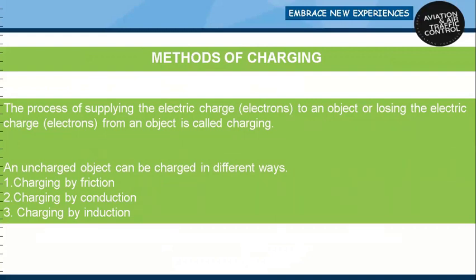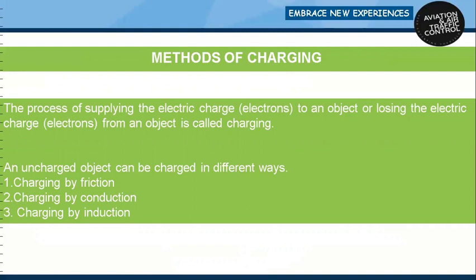An uncharged object can be charged in different ways: by charging by friction, charging by conduction, or by charging by induction. These are three methods: friction, conduction, and induction.